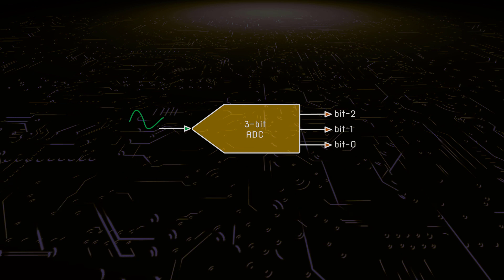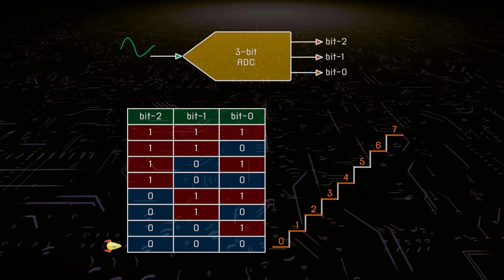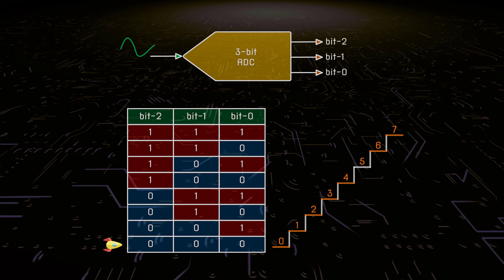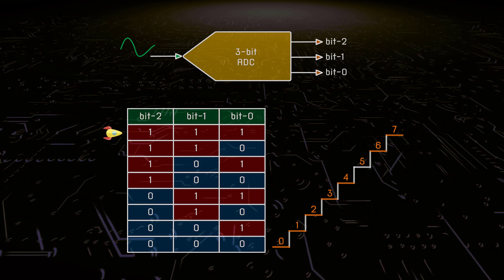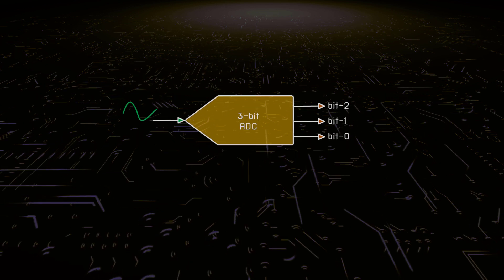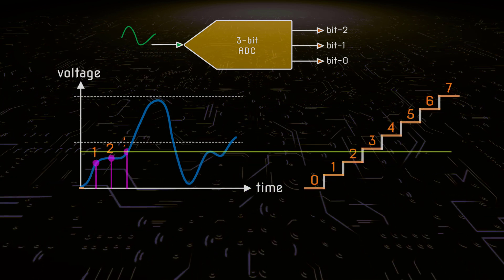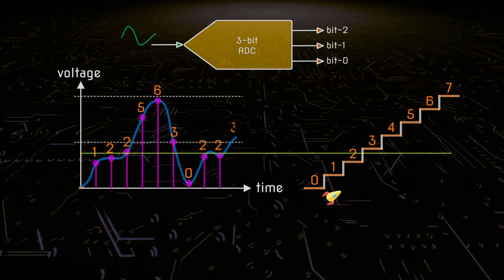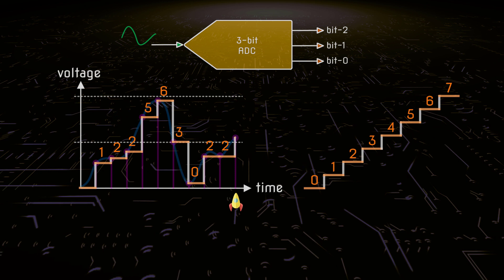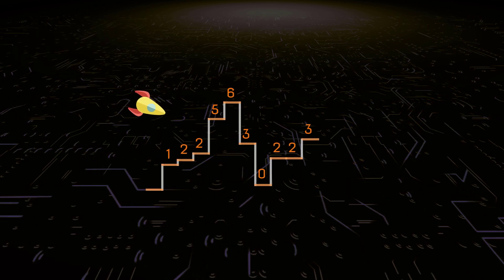The same idea applies to the 3-bit ADC. The outputs of the 3-bit ADC are 8 different values, starting from 000 to 111, where 000 represents the minimum value and 111 represents the maximum value. The input voltage can be represented by 8 steps, sampled at fixed intervals of time, taken point by point. Here is the final result we get from the 3-bit ADC.